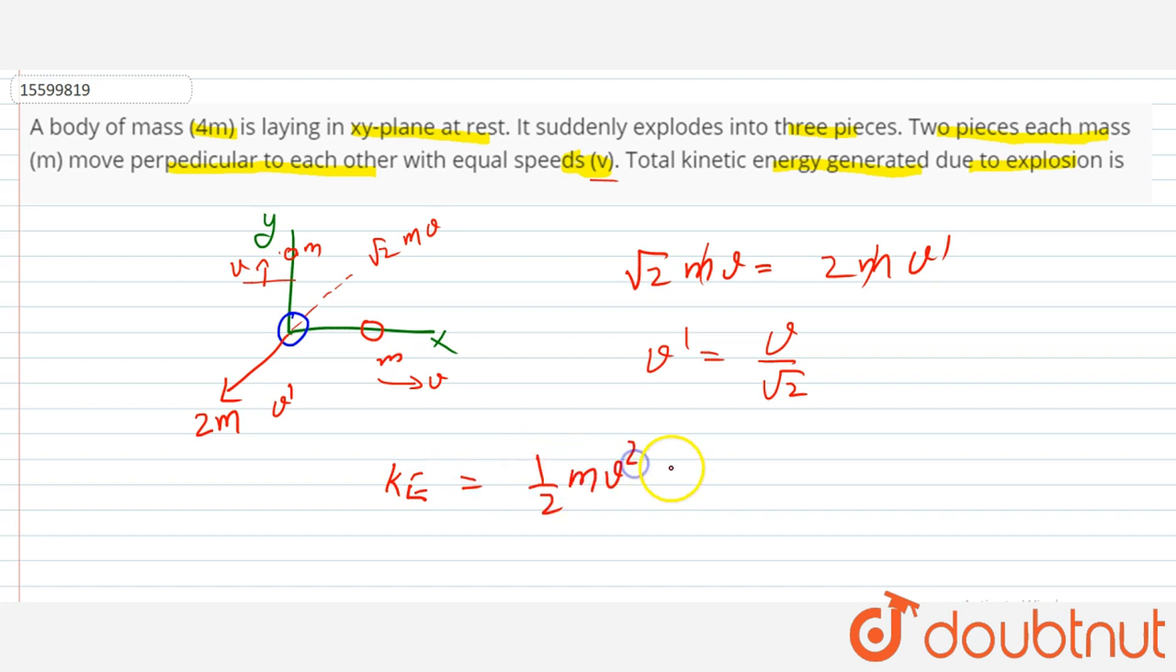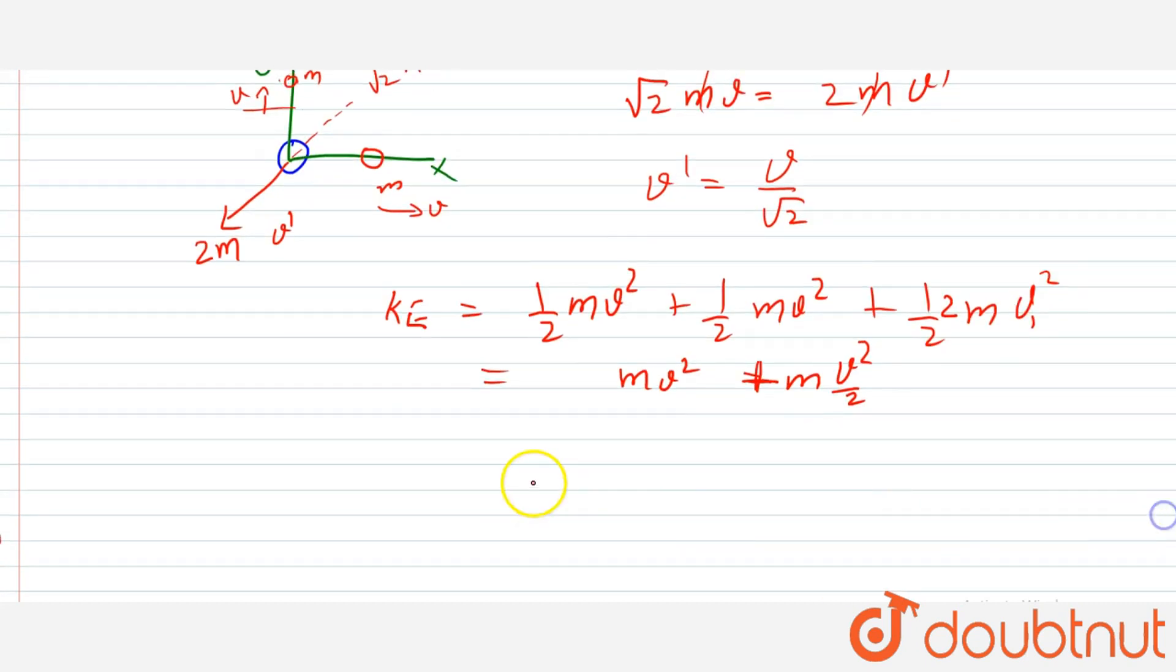Finally kinetic energy, so kinetic energy is half mv square plus half mv square, this kinetic energy plus this kinetic energy. This is 2m, so half into 2m plus mv square, so V square by 2. So kinetic energy is 3mv square by 2. Okay.